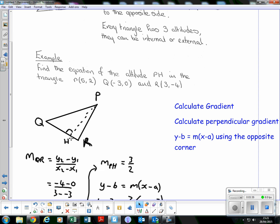Quick run through again: find this gradient, flip it to find the perpendicular gradient, then y minus b equals m(x minus a) using point P.